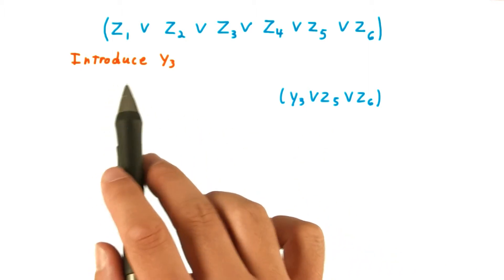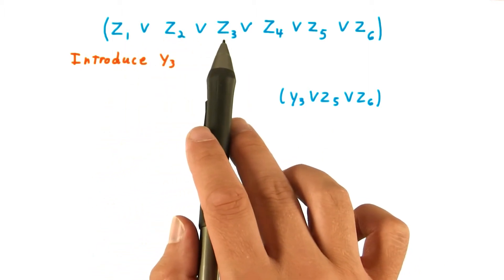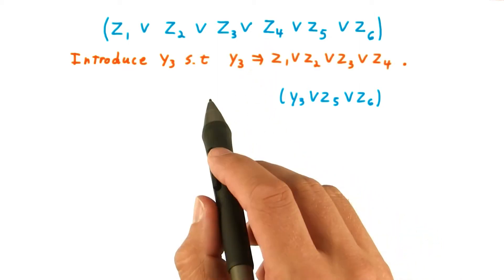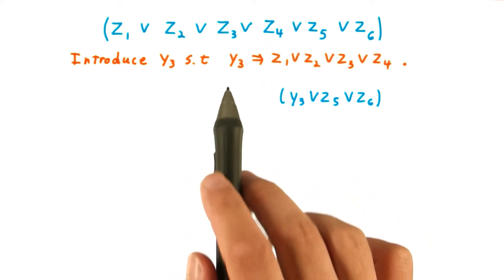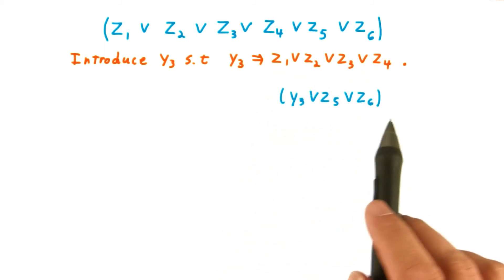At first, I said that we wanted Y3 to be equal to Z1 or Z2 or Z3 or Z4. But actually, it's sufficient, and considerably less trouble, for Y3 just to imply the truth of one of those literals.